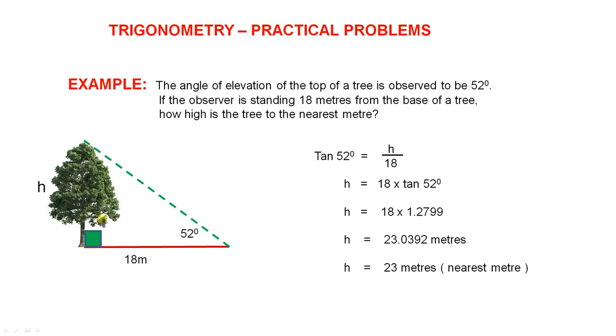Now here's the angle, and we have the opposite, and we have the adjacent. So tan 52 equals h over 18, which is the opposite over the adjacent. That's why we're using tan. h equals 18 times tan 52. h equals 18 times 1.2799. h equals 23.0392 metres. So the height of the tree is 23 metres to the nearest metre.